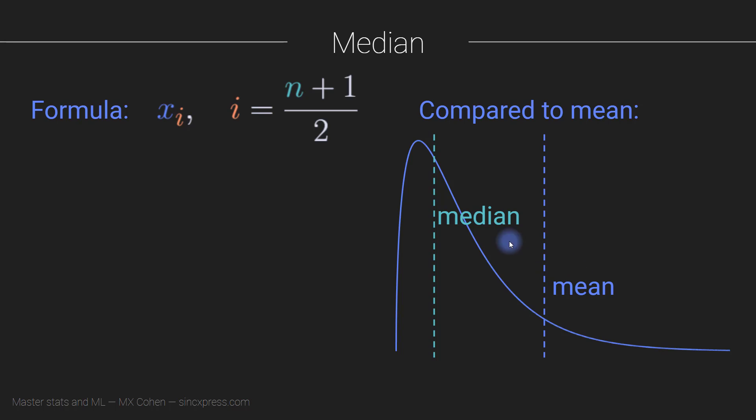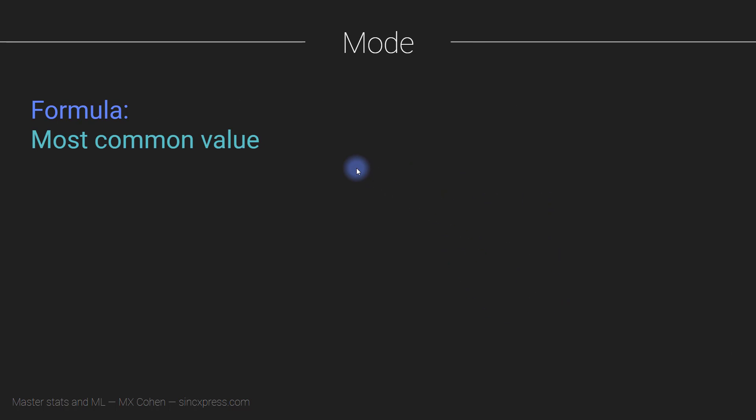Now, the mean and the median are the two main measures of central tendency for numeric data. If you have categorical data, you cannot apply these two measures. Instead, for categorical data, you use what's called the mode, which is simply the most common value.